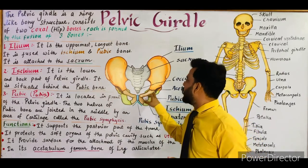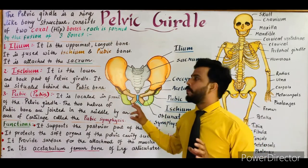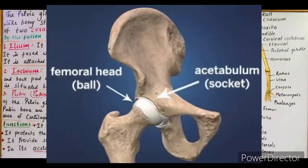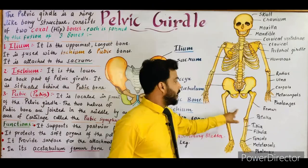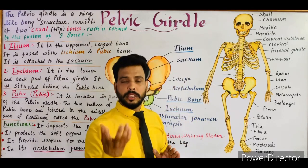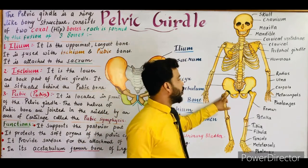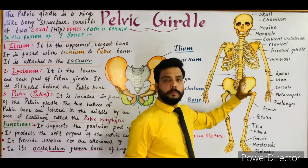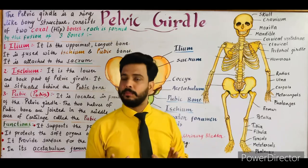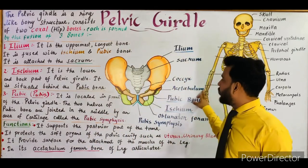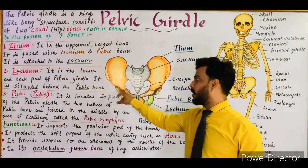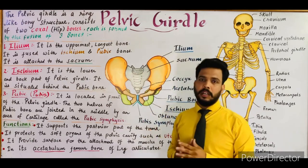There are two depressions present in the pelvic girdle known as the acetabulum. The acetabulum accommodates the head of the femur — the leg bone. The femur is the largest and longest bone of our body, and its head articulates with the pelvic girdle through a pit or depression known as the acetabulum. There are two acetabula, one on each side, where the femur articulates.